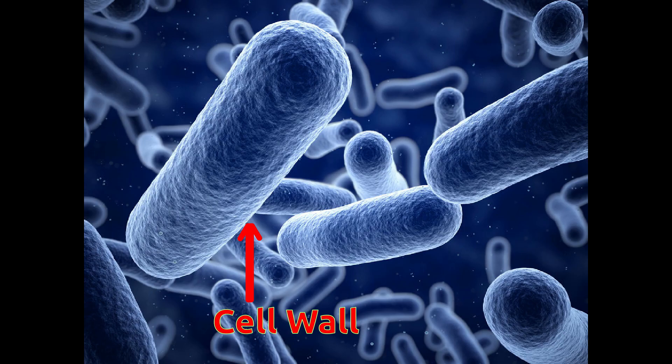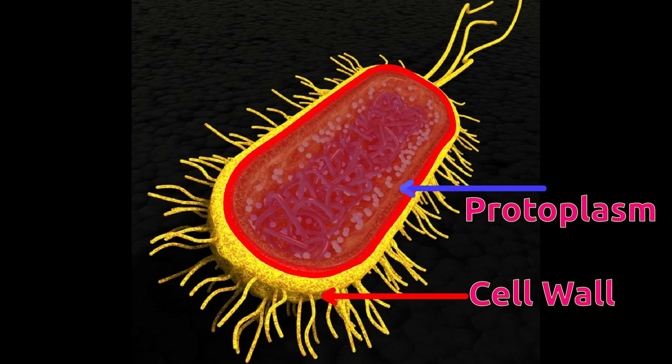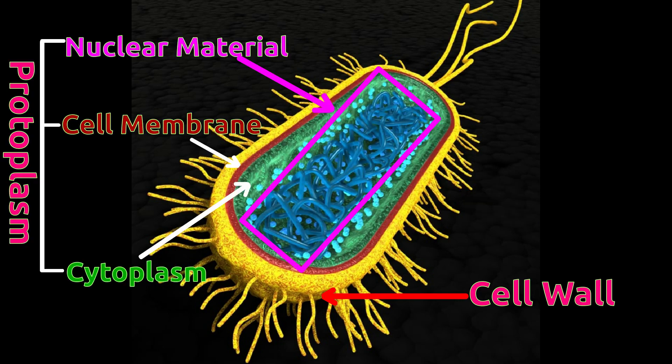Let's learn about the structure of a bacteria cell. The cell, or body, of bacteria is covered with a rigid cell wall which protects and gives a rigid shape to bacteria. The cell contains protoplasm which is considered the living material. Protoplasm is differentiated into cell membrane, nuclear material, and cytoplasm.